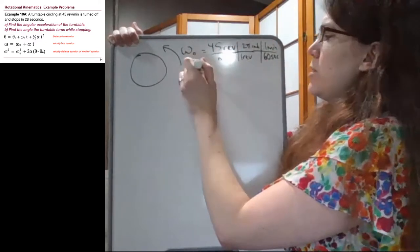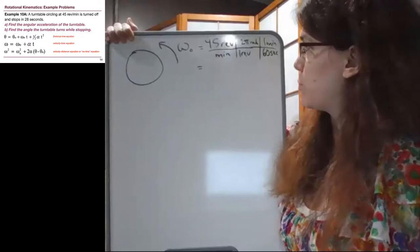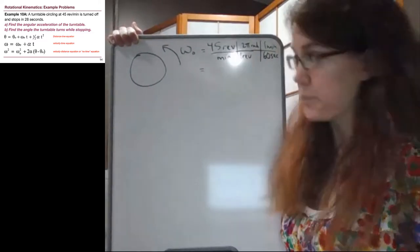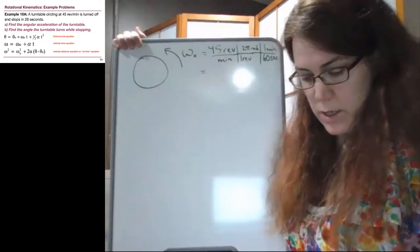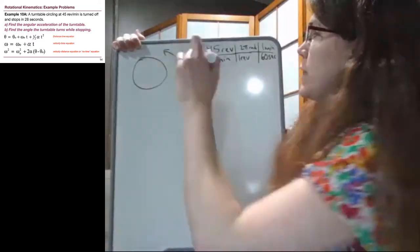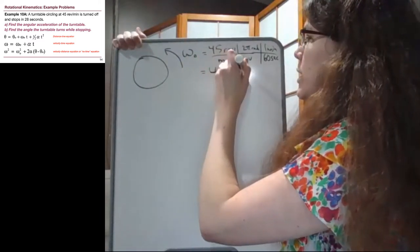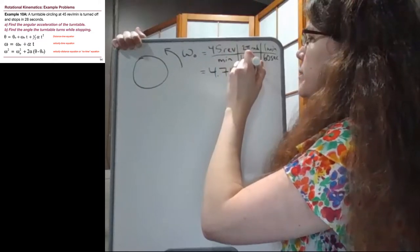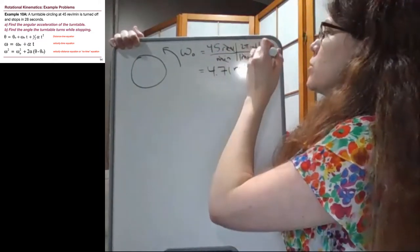If you can't read this here in the corner it's just a unit conversion problem from revolutions per minute to radians per second. So we have 45 times 2 times pi divided by 60. And we get 4.71 radians per second, because the revolutions units went away and the minutes units went away.